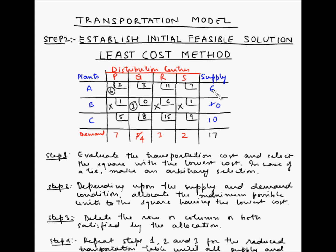With this allocation, the supply capacity available for A now becomes 0 because A is supplying its entire supply to distribution center P. The demand for P has been satisfied by 6 units, so the remaining demand which is unsatisfied is 1 unit. Step 3 says delete the row or column or both satisfied by the allocation. For plant A, the supply has been completely allocated whereas for P, the demand has not been completely satisfied. So A cannot supply to any other distribution centers. We will cross off the remaining boxes.